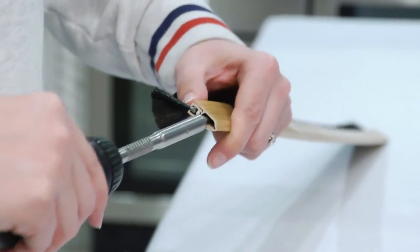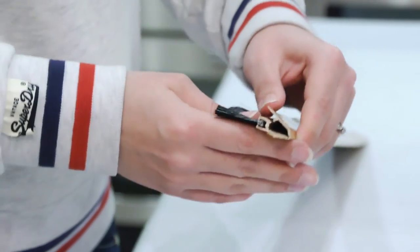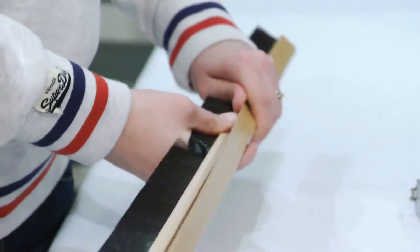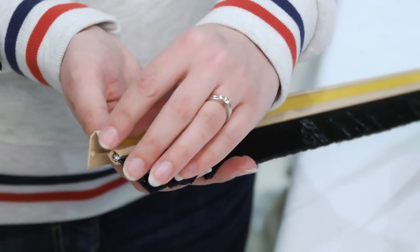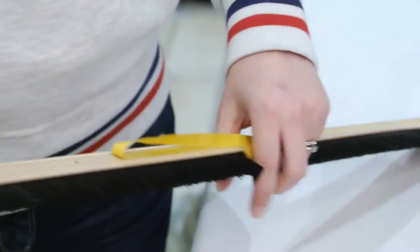Now take the screwdriver and prise open the cover before opening it up. If your door brush seal has a backing, peel this off before the next stage.